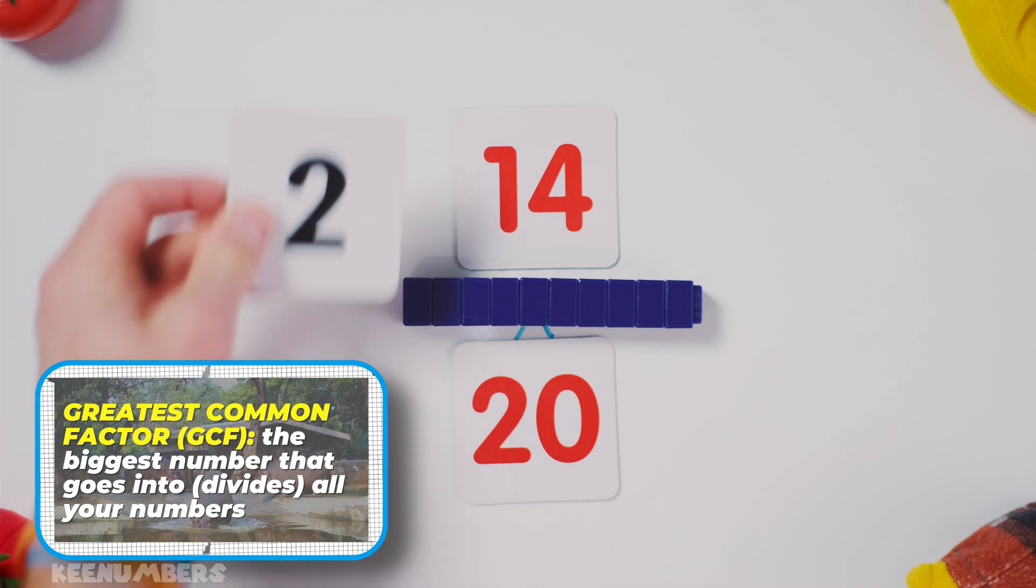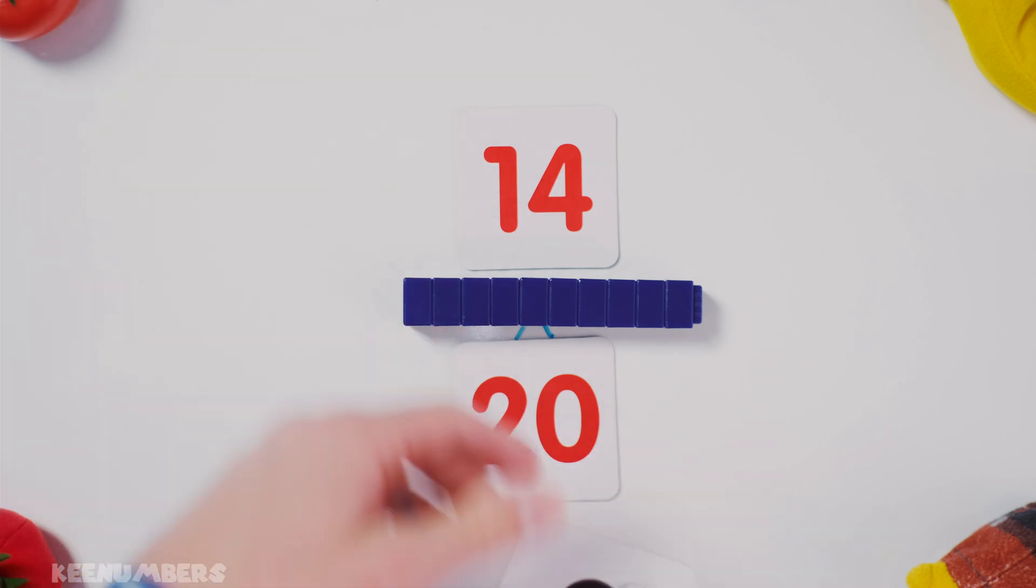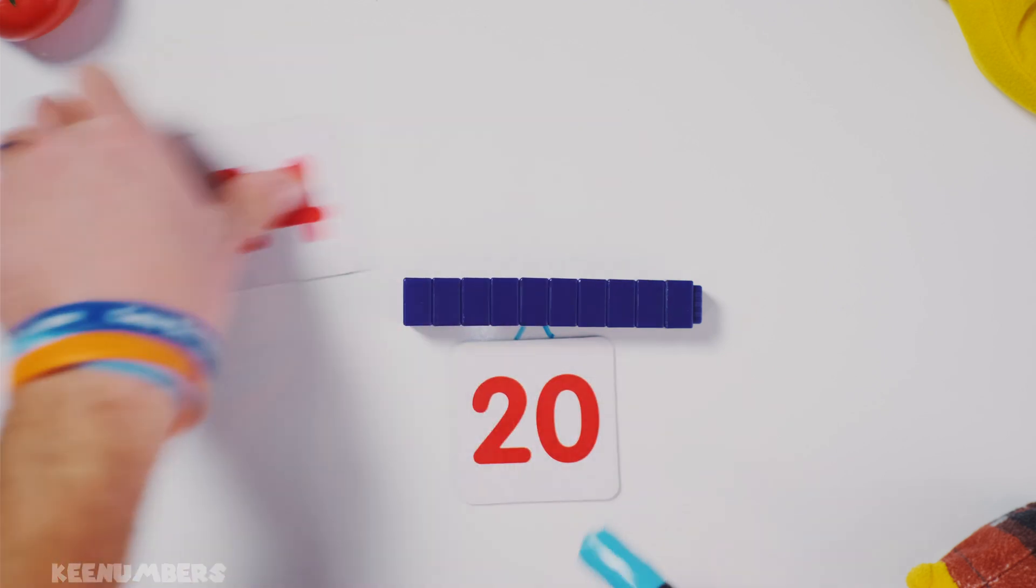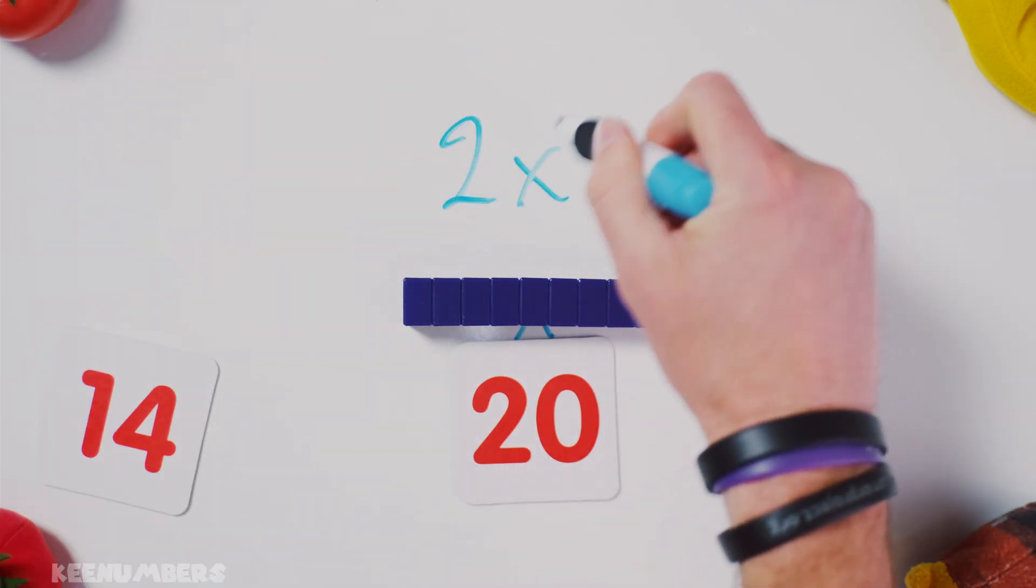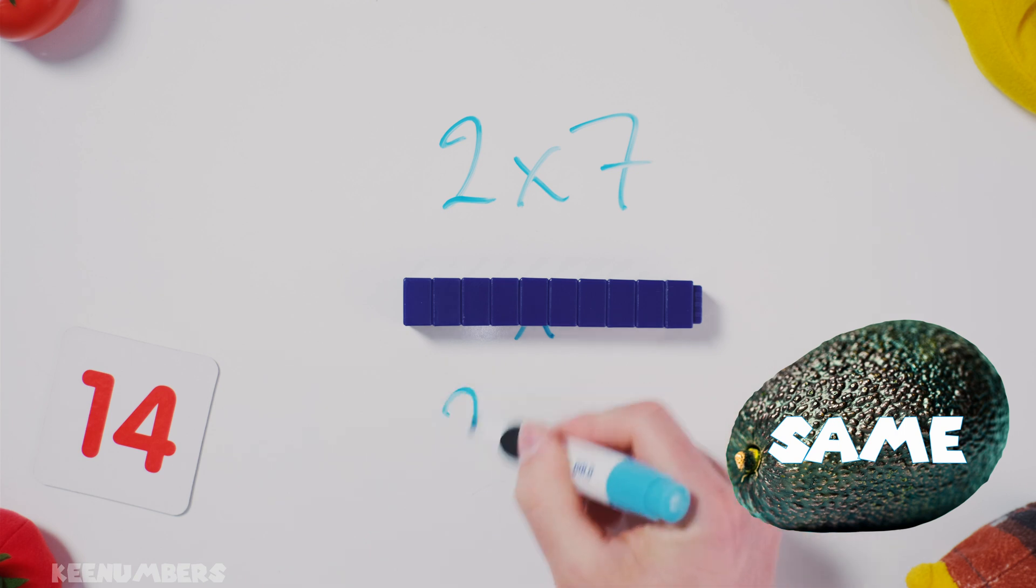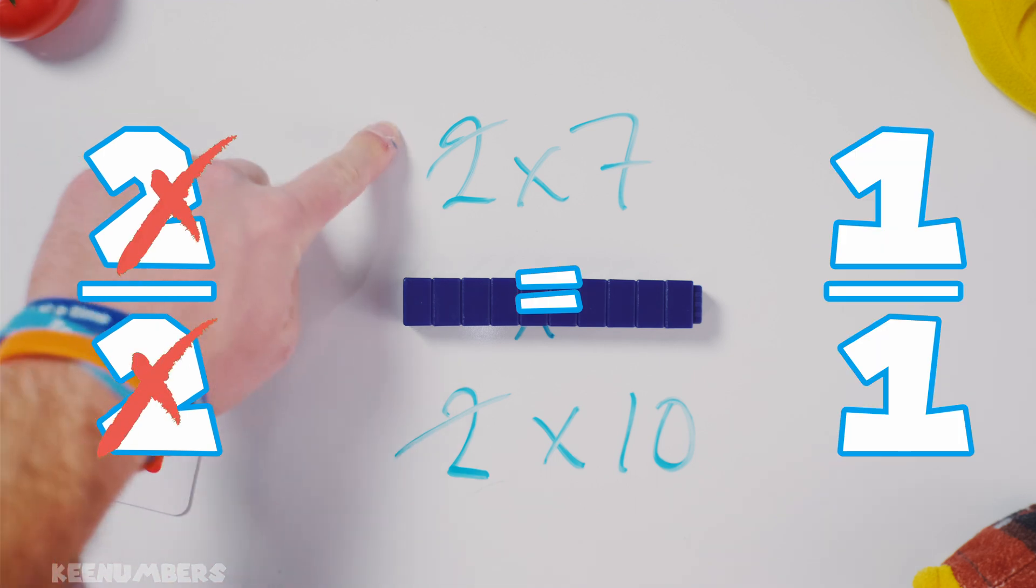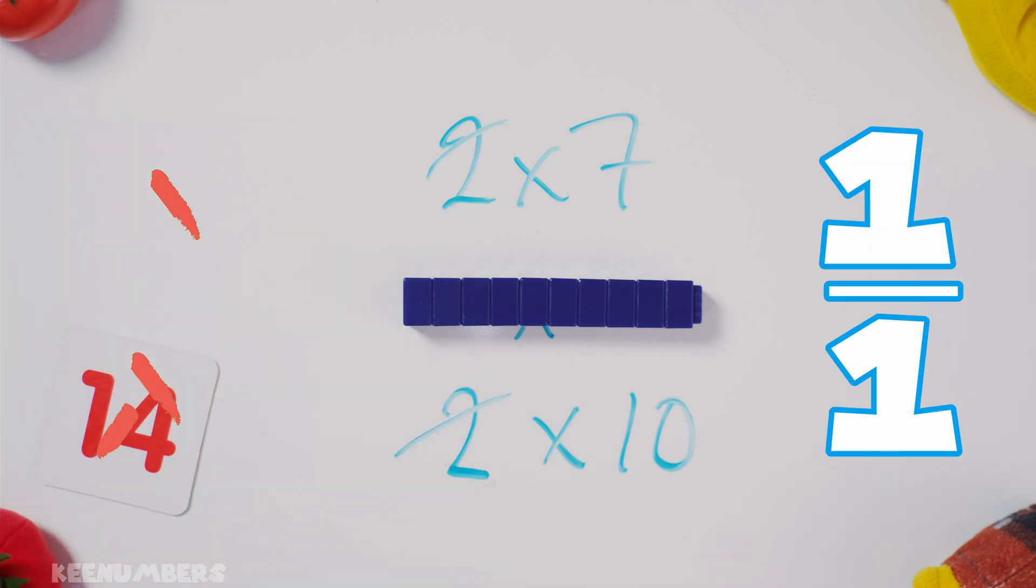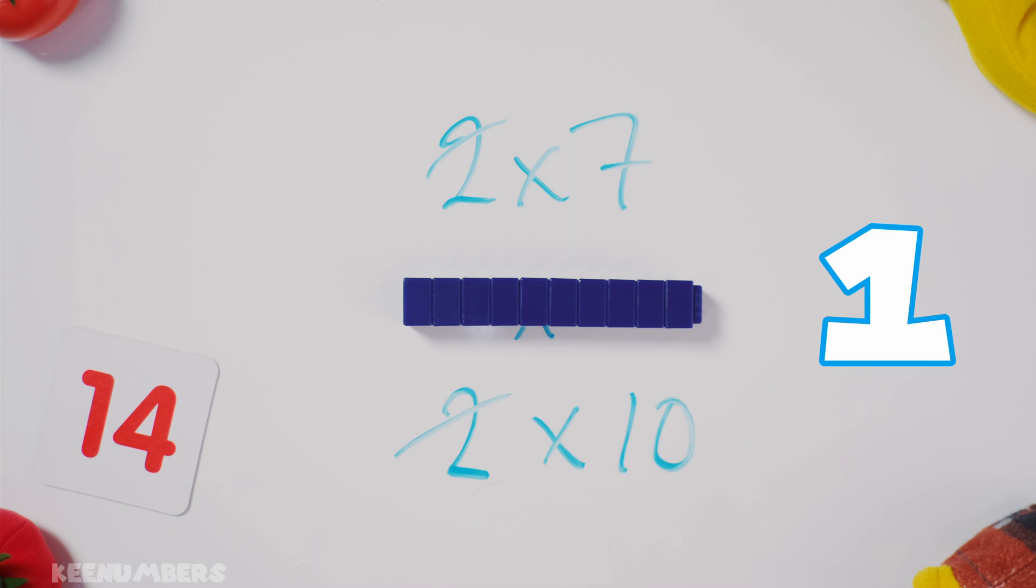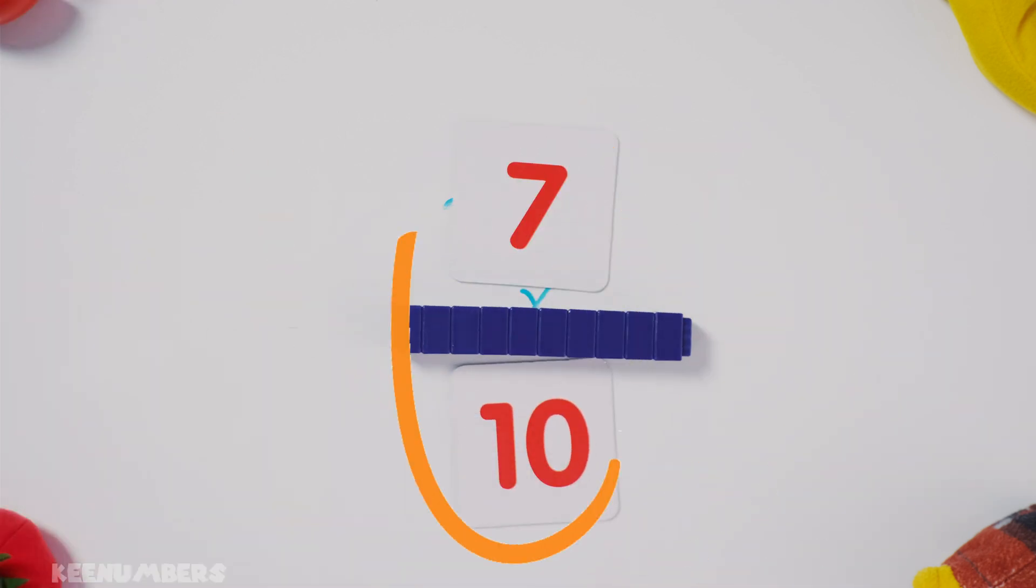Two is the greatest common factor that goes into fourteen and twenty. So we're gonna cancel out the two, because this is the same thing as two times seven. This is the same thing as two times ten. That greatest common factor of two? Any number divided by itself? Uno! So what you're left over with is seven over ten.